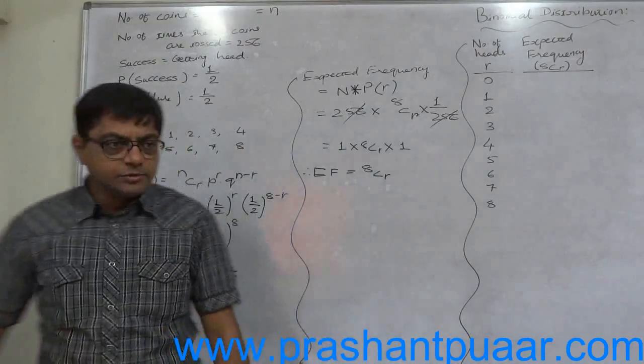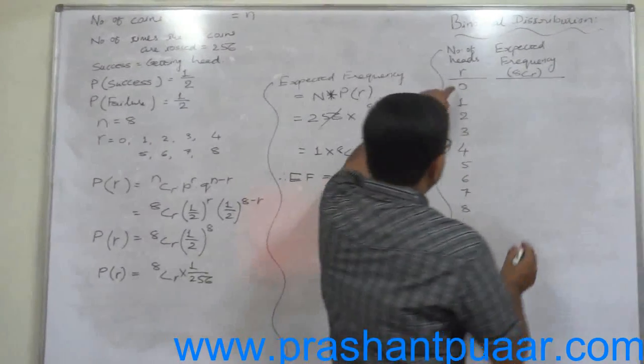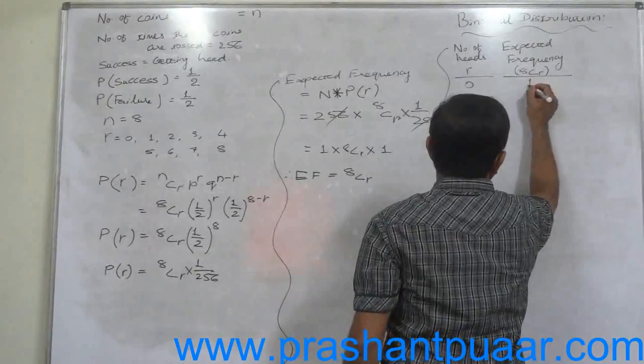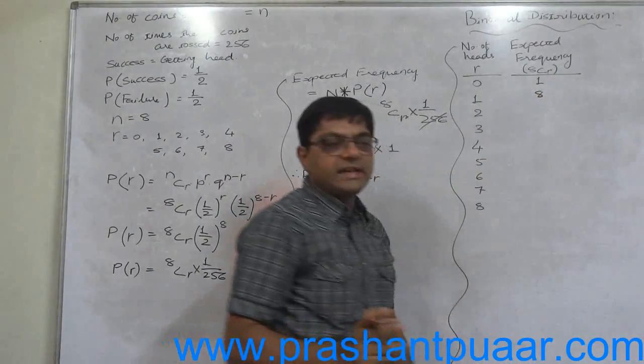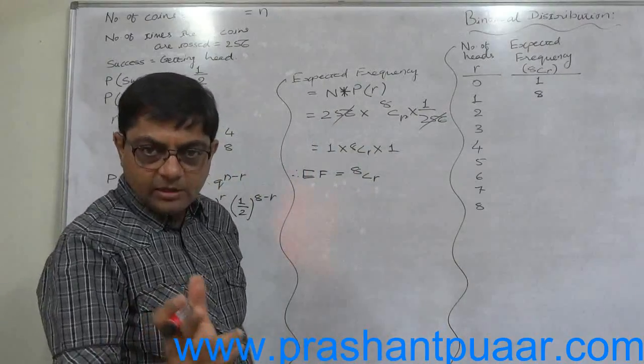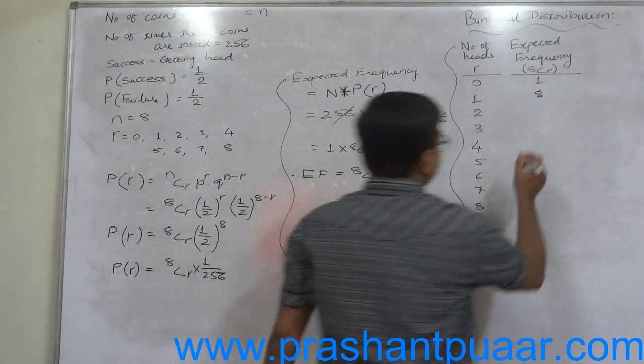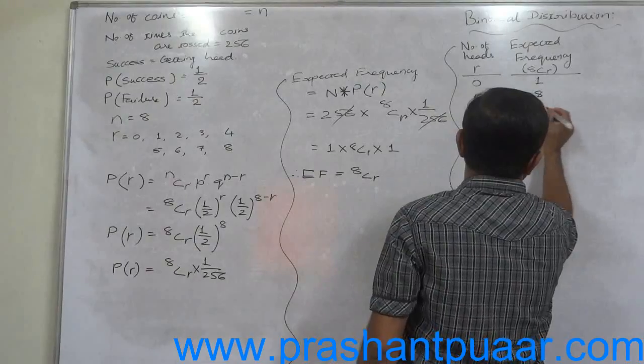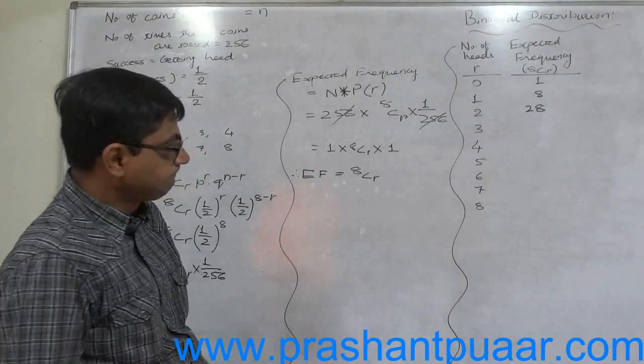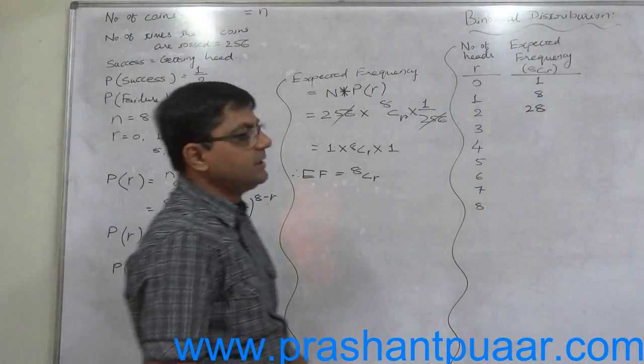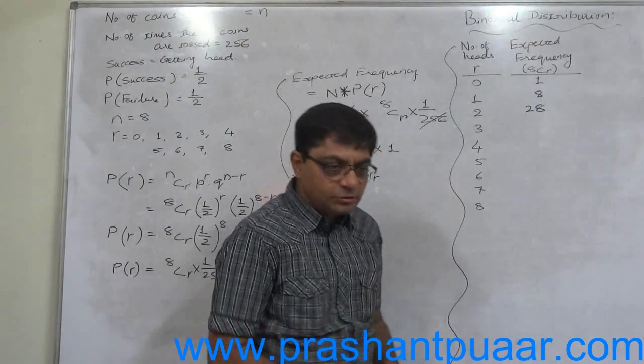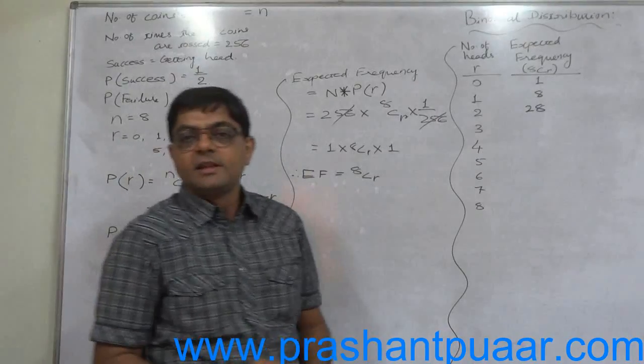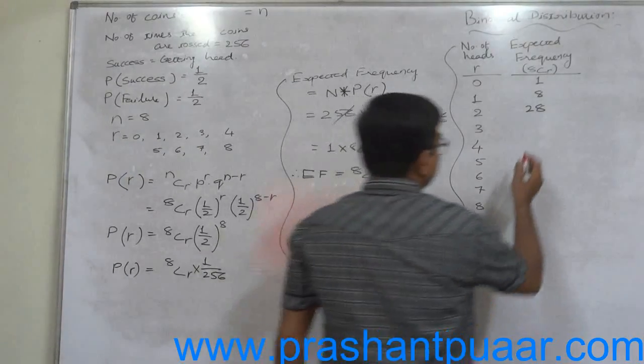Let us substitute values of R in 8CR. 8C0 is always 1. 8C1 is 8. What is 8C2? 8 into 7 divided by 2, so it is 28. Now what is 8C3? 8 into 7 into 6 divided by 3 factorial. That means 8 into 7, 56.